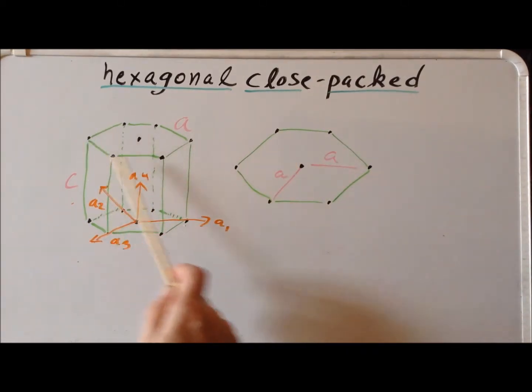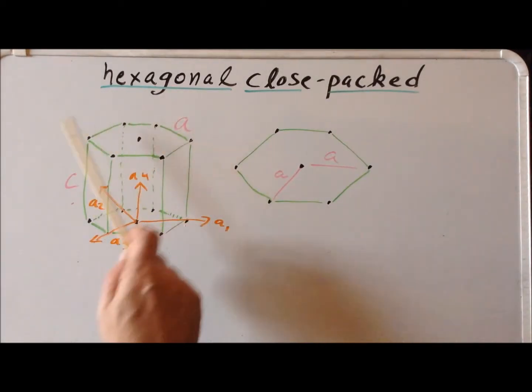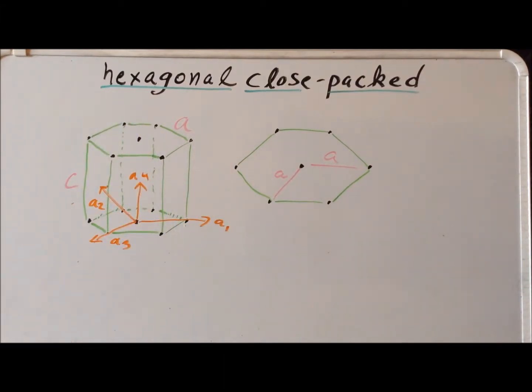Here we have the so-called top plane, top face of this hexagonal prism, and this is our (0001) plane. And we see that it has hexagonal structure, but also within it, as we've seen with other structures,